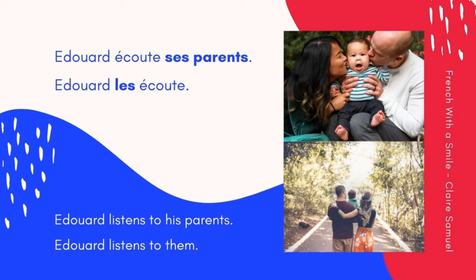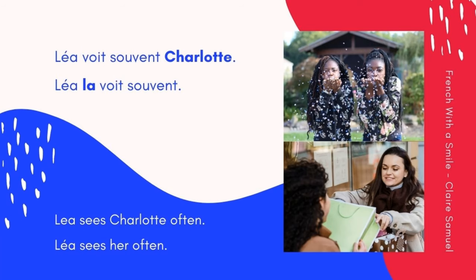Now an easy one: Édouard écoute ses parents → Édouard les écoute. Ses parents is plural, it's direct — no preposition between 'écoute' and 'ses parents'. Édouard les écoute. With a liaison please. Together: Édouard écoute ses parents → Édouard les écoute. Let's spice things up with a little adverb: Léa voit souvent Charlotte → Léa la voit souvent. The adverb 'souvent' stays in the same order, but 'la' goes immediately before the verb.